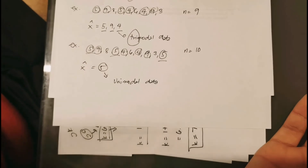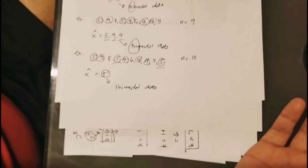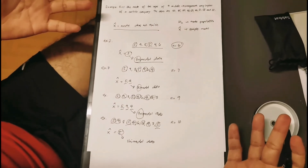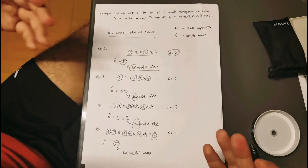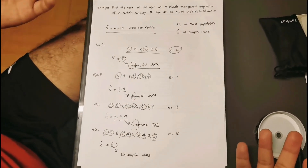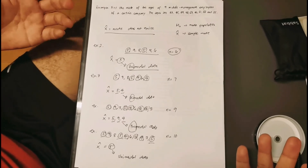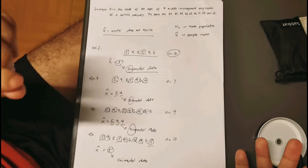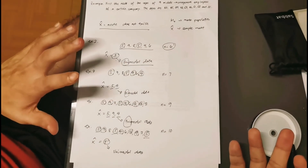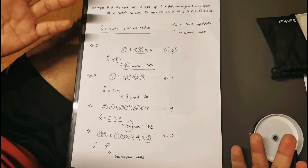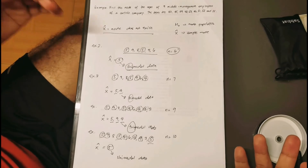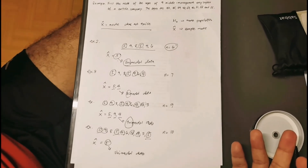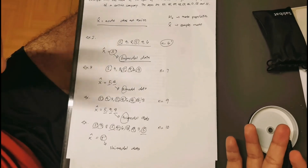I hope this explanation is clear — how to find the mode of a given data set. The mode is the most frequently reoccurring value. Should you have any questions or clarifications, leave a comment below. Thank you so much for watching, please tune in for upcoming videos, and be safe.